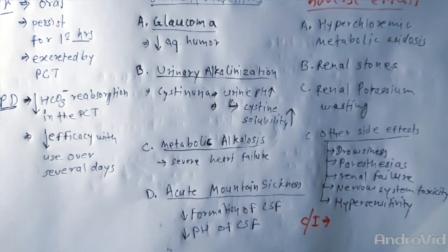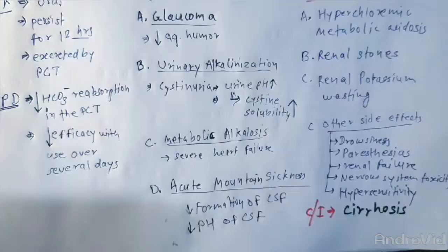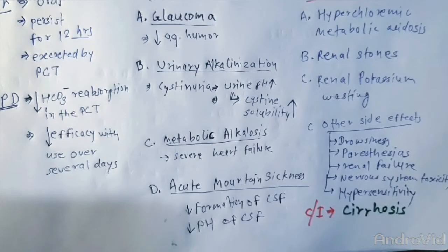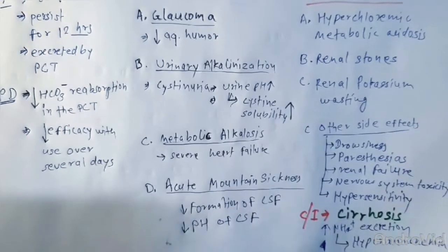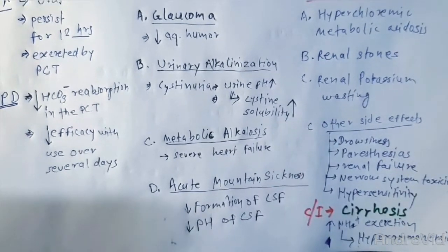Acetazolamide is contraindicated in patients of cirrhosis, because alkalinization of urine decreases the urinary excretion of NH4 plus ion and may contribute to the development of hyperammonemia and hepatic encephalopathy.